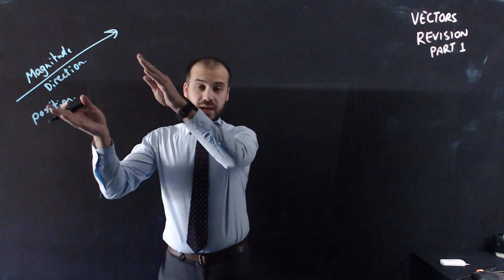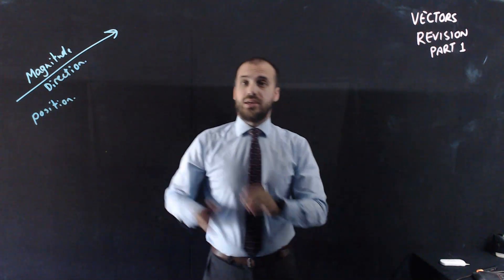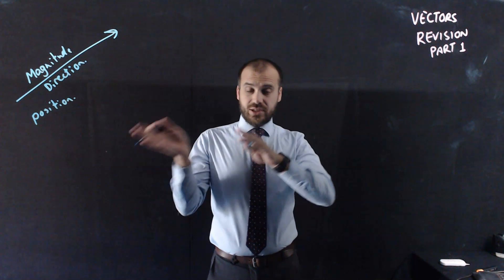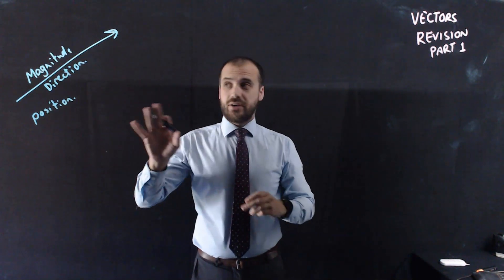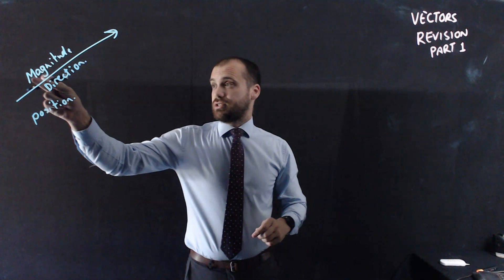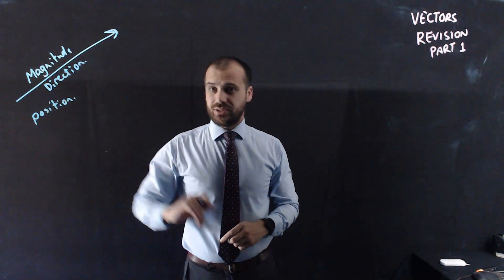That means we can pick up the arrow and move it from there to there to there to there. It's the same vector no matter where I place it. So there's our first step. What is a vector? It's got magnitude, direction, but it doesn't necessarily have position.